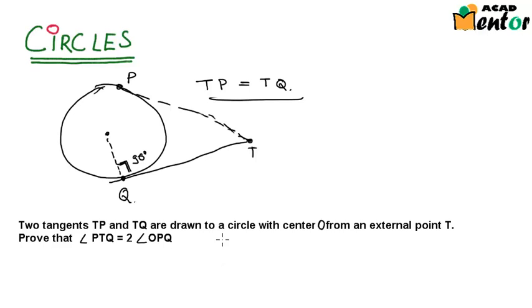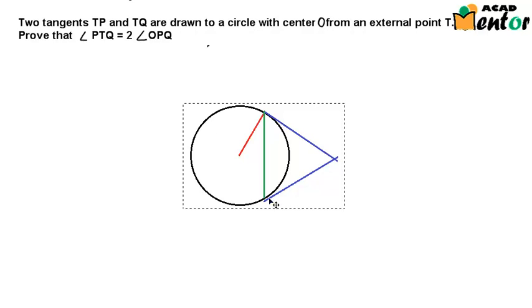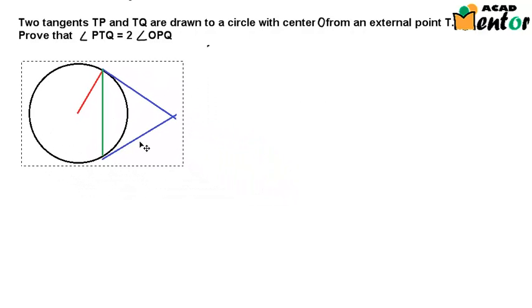Now always, the first step is to draw the figure. Let us see what the figure would be like. So the figure would be something like this. If you read the question again, it says that there is a circle with center at point O. So let this be the center at point O.